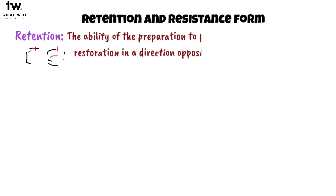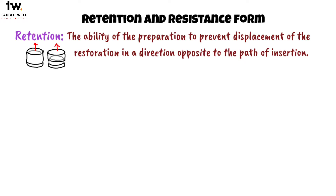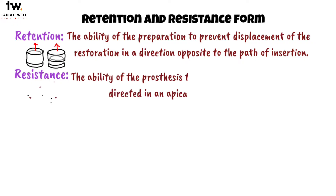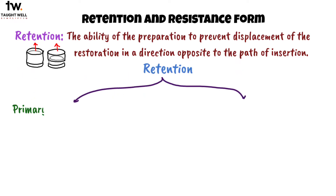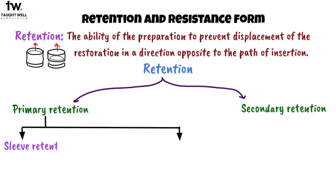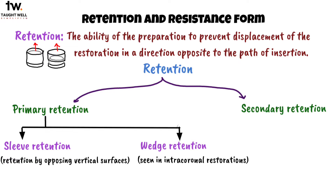Next is retention and resistance form. Retention is defined as the ability of the preparation to prevent displacement of the restoration in a direction opposite to the path of insertion, and resistance is defined as the ability of the prosthesis to resist displacement by forces directed in an apical or oblique direction. Retention and resistance are reciprocating to one another. Retention is further divided into primary retention and secondary retention. Primary retention includes sleeve retention, which is retention by opposing vertical surfaces, and wedge retention, which is seen in intracoronal restorations. Secondary retention is obtained by retentive features such as retentive pins, grooves, and boxes.